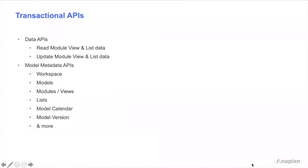This slide shows some of the APIs that we will look at. The new Anaplan Transactional APIs are distributed across two main categories: Data APIs to work with Module, View and List Data, as well as Model Metadata APIs. The Model Metadata APIs help to fetch properties and metrics for various Model Objects such as Workspaces, Models, Modules and Views, Lists, Model Calendar, Model Version and more.